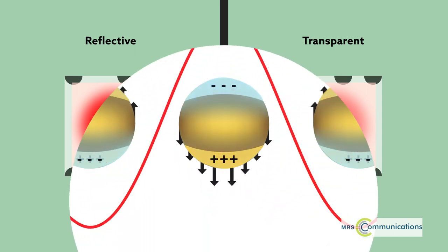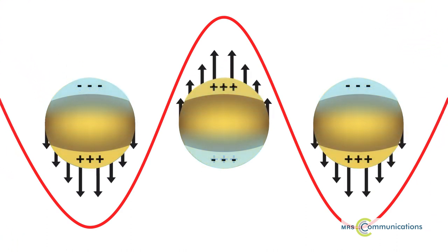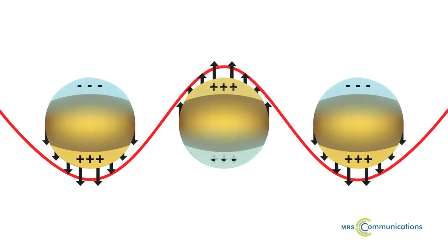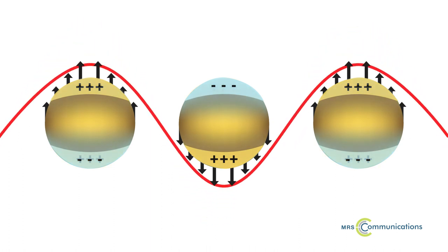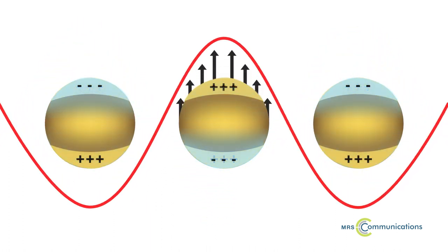Under light of a certain color, electrons in plasmonic nanoparticles sway in unison, generating a distinct optical signature sensitive to the size and shape of the nanoparticles and their immediate environment.